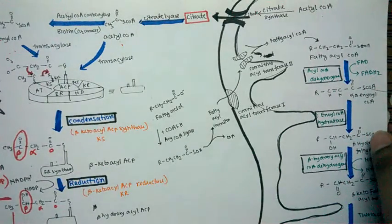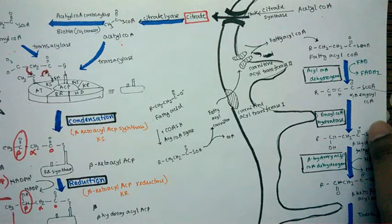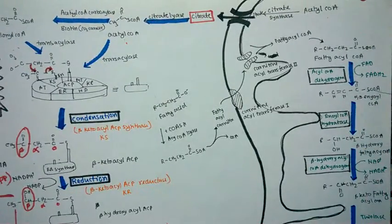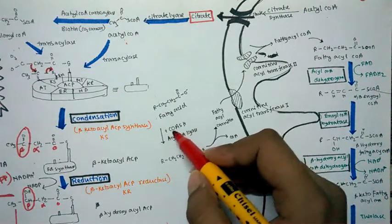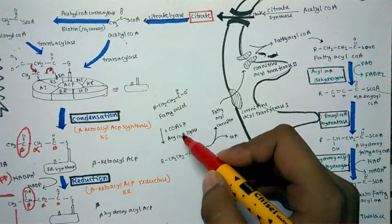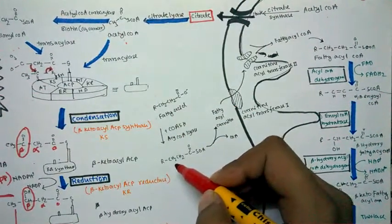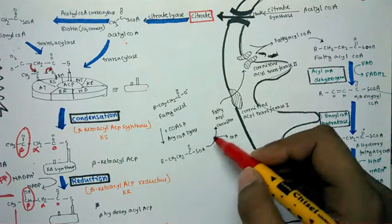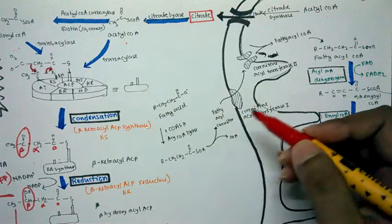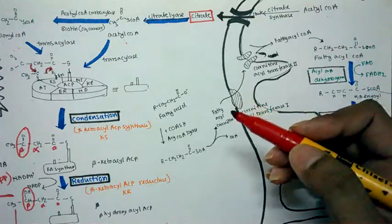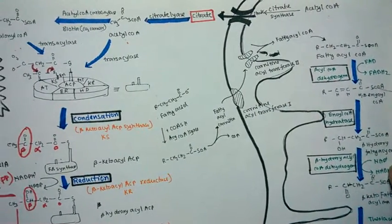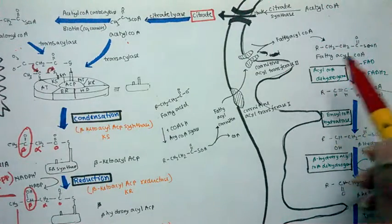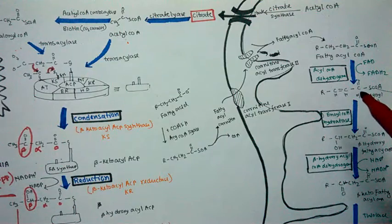Fatty acid catabolism takes place in the mitochondria. To break down fatty acids, they must first enter the mitochondria, but fatty acids cannot get inside directly. So the fatty acid is first activated with CoA by acyl-CoA ligase to form fatty acyl-CoA. Then, with the help of carnitine acyl transferase I and carnitine acyl transferase II, the fatty acyl-CoA is transported inside the mitochondria.